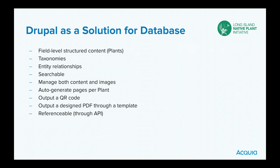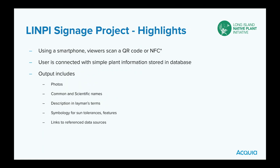Some features I added: generating plant signs was the main requirement, done through PDF generation. I added a QR code so visitors can get back to the site. And most recently, I did a plant availability feed via API for my Squarespace site to show which plants are in stock.